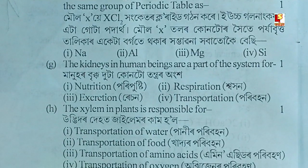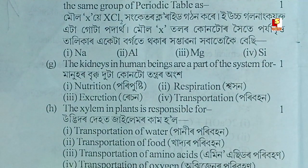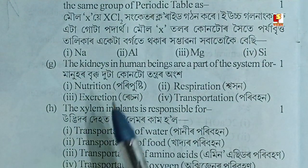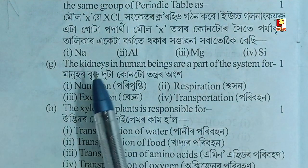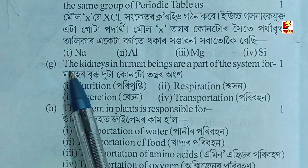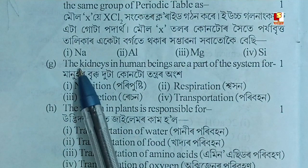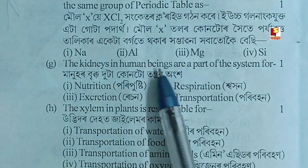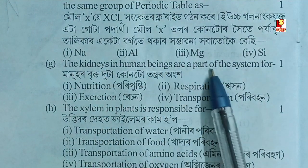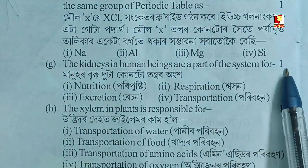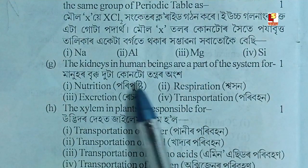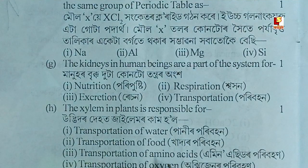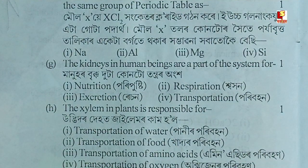The kidneys in human beings are a part of which system? The answer is the excretory system.